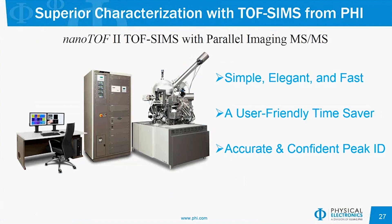To summarize, the NanoTOF II gives us a capability for TOF-SIMS analysis while using the parallel imaging MS-MS capability for absolute peak identification. It's a tandem MS capability incorporated with TOF-SIMS that is simple, elegant, and fast — very user friendly. It saves a huge amount of time. For the first time, we have accurate and confident peak identification. Thank you everyone for participating, and have a great rest of your day.